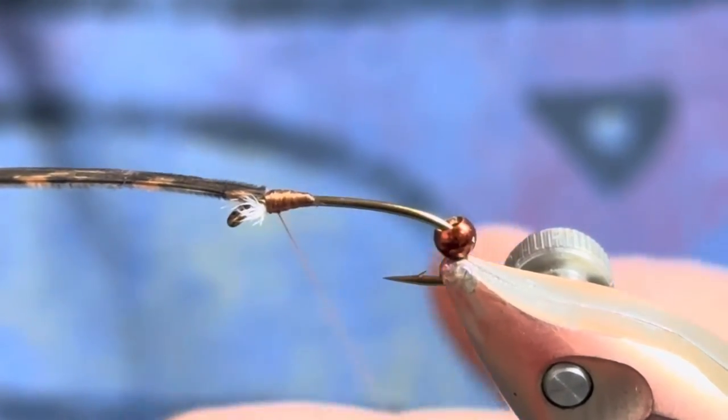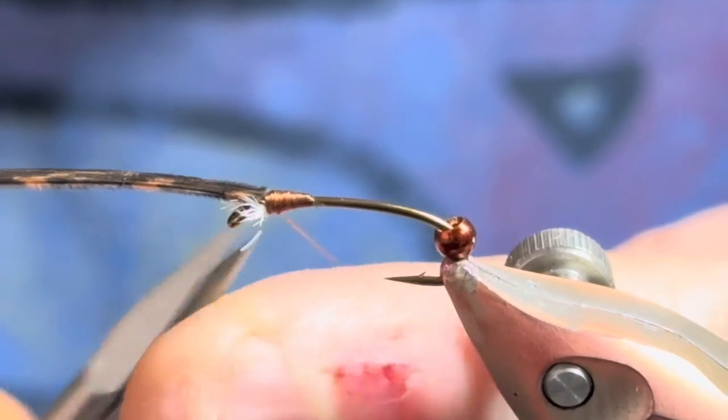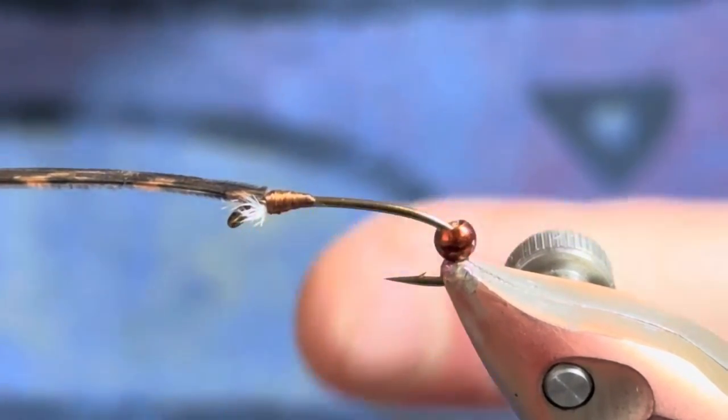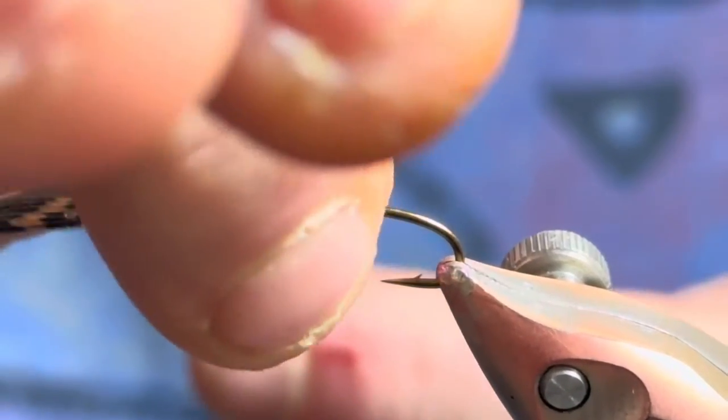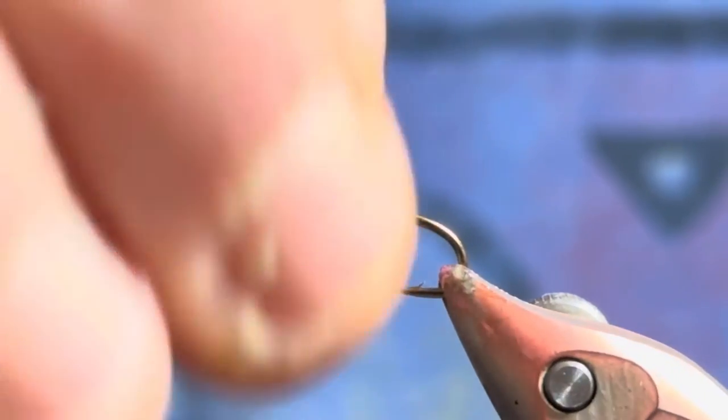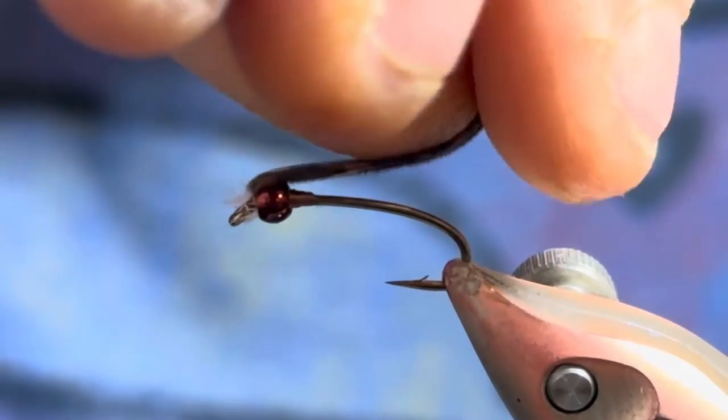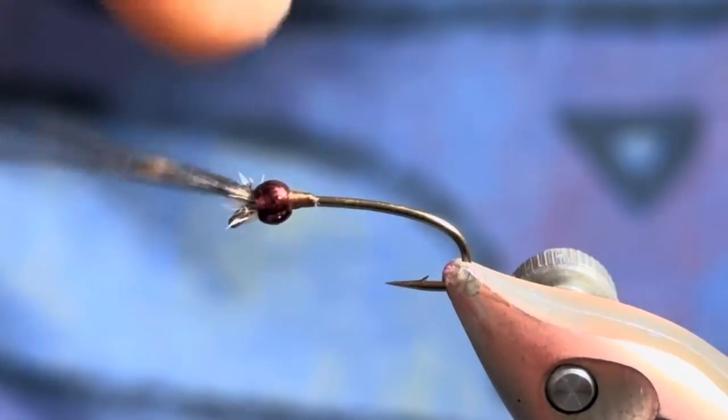And then come in and just whip finish right there. So we've built our thorax up. Now I can get rid of that thread, toss this bead up, and you can see that dam allows me just to kind of wedge that bead about as far forward as I'd like.